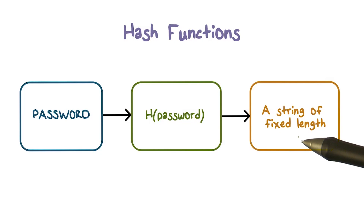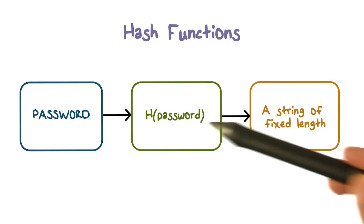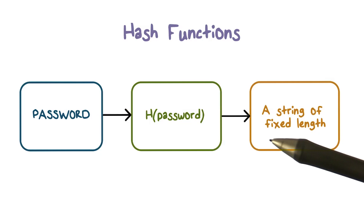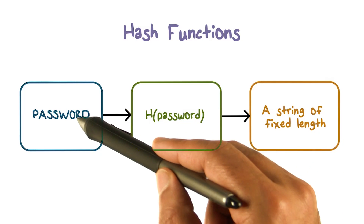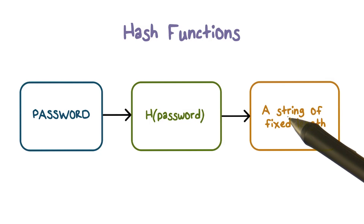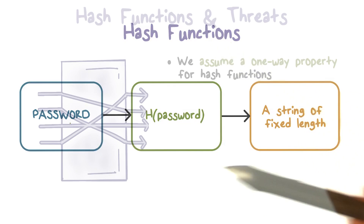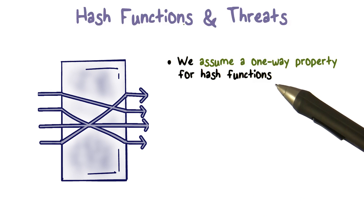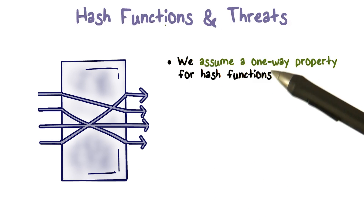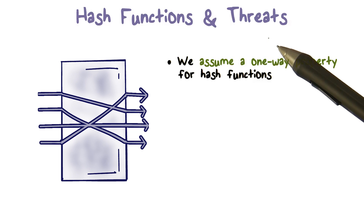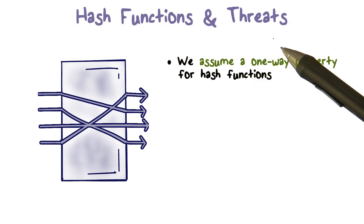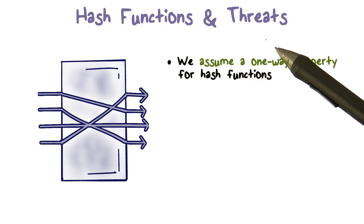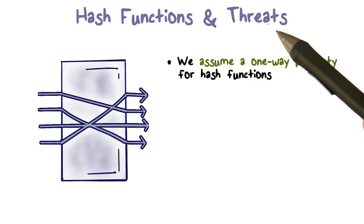In this direction, it's one way, so it's easy to go. It's easy to compute this function given the input and produce the output. If we just had the output and wanted to invert it — go in the other direction — that's going to be really hard. Given that we're going to derive something from a password using a hash function and store that, let's talk about a couple of threats. Because of the security mindset we have, any time we make a decision, we want to think about its security implications.